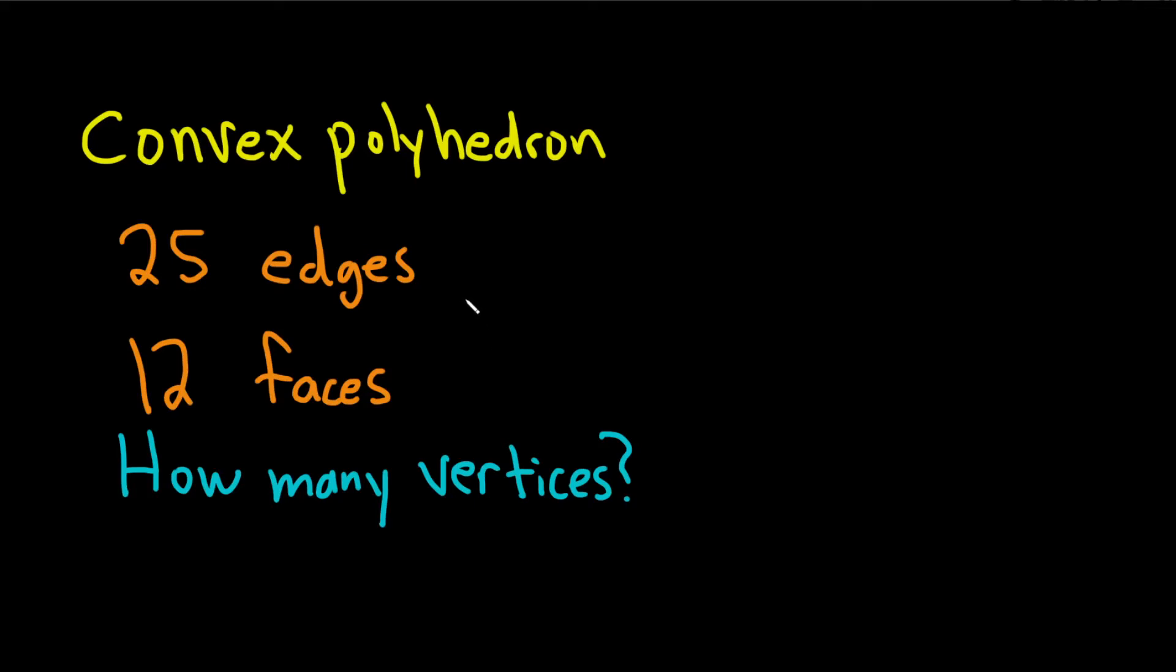So we have a convex polyhedron and we're told we have 25 edges and 12 faces, and we want to figure out how many vertices do we have.